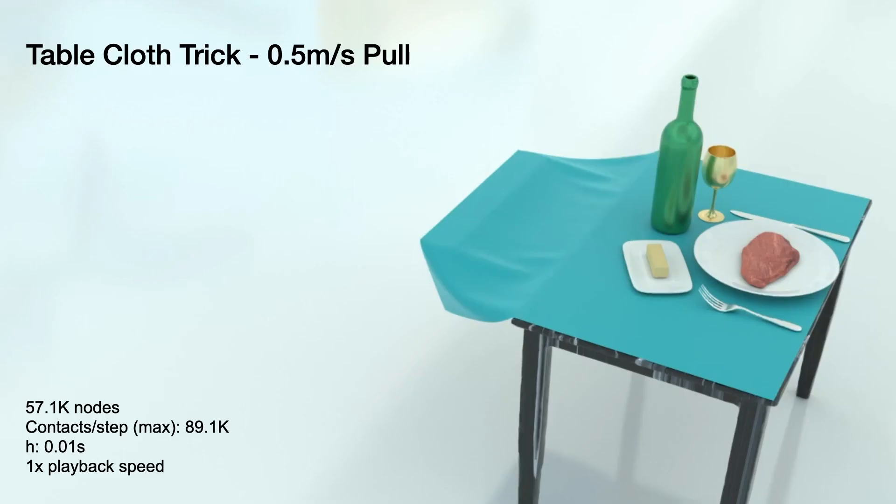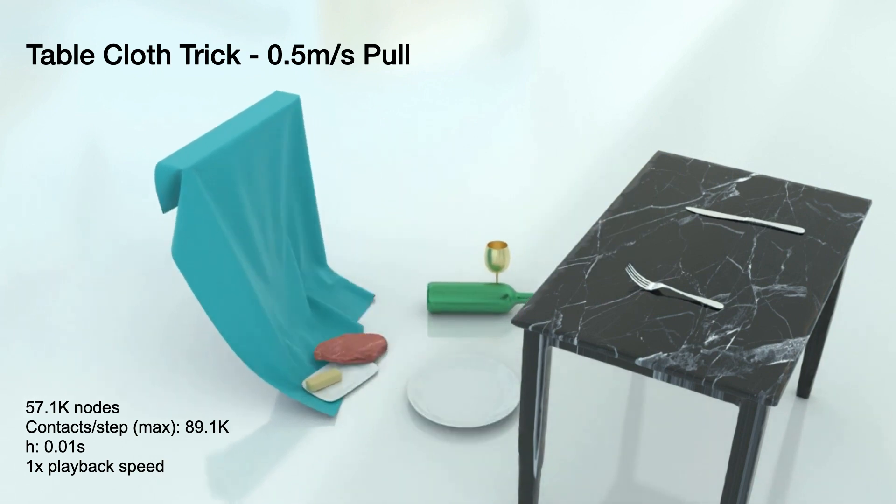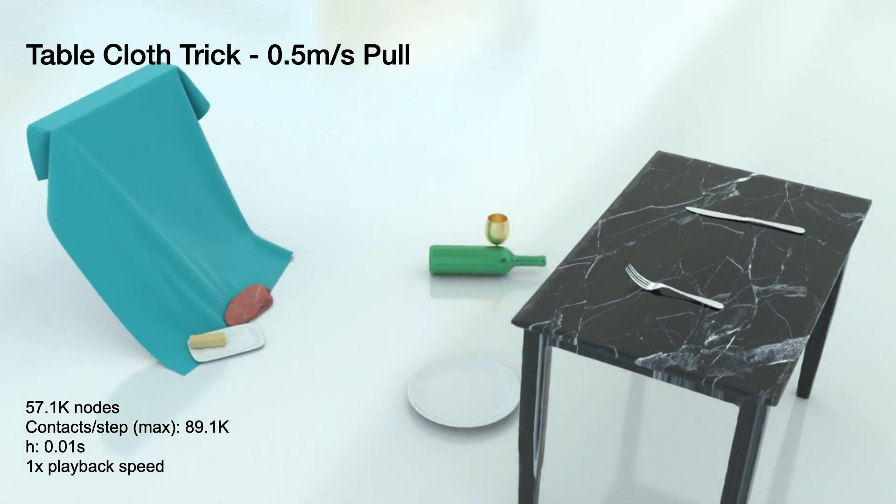Finally, let's return back to our beginning with the tablecloth trick. Here we start with finite element tableware and dinner resting on a shell cloth. With too slow of a pull, friction can't be overcome and our dinner crashes off.